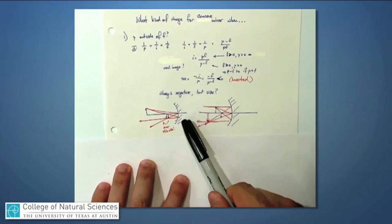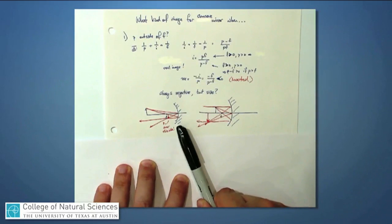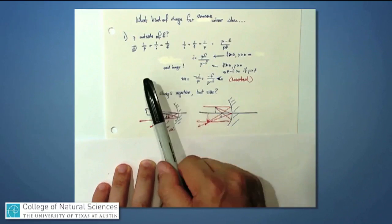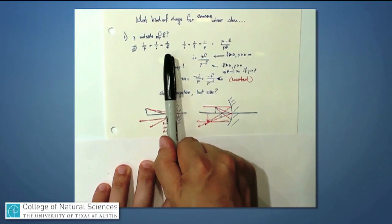So a concave mirror is one that's bowed in like this. Its radius of curvature is positive, its focal length is positive. And for our expression 1 over p plus 1 over i is equal to 1 over f.